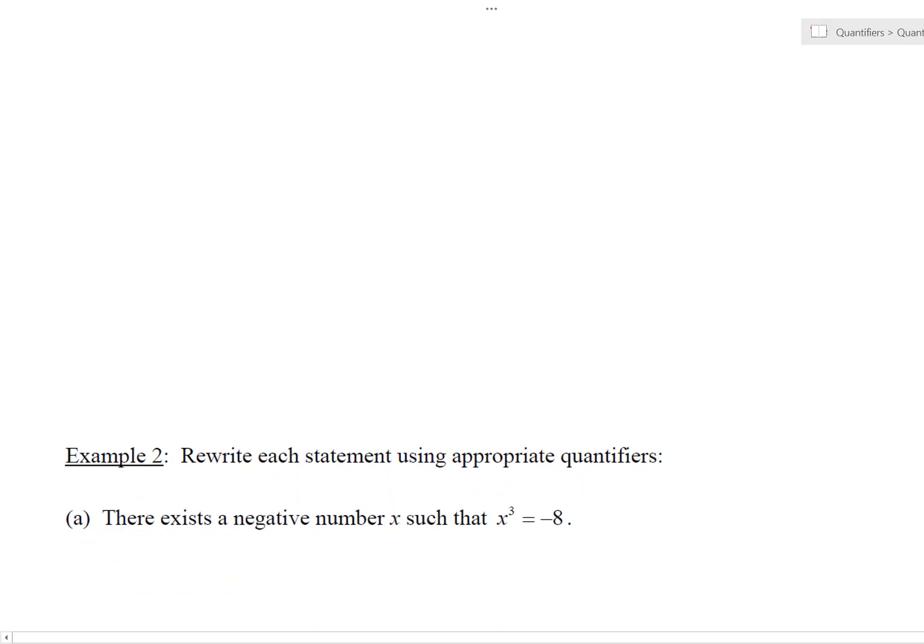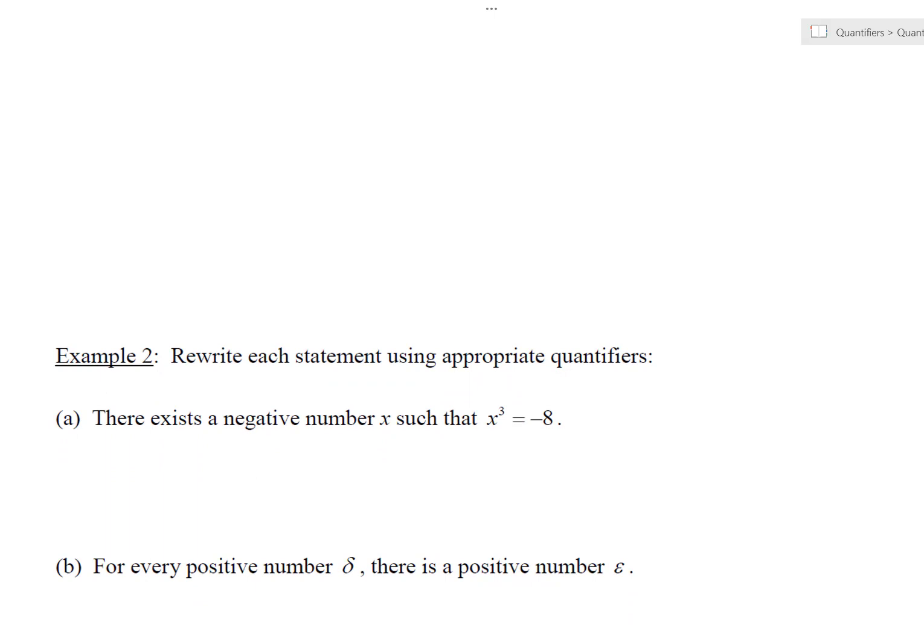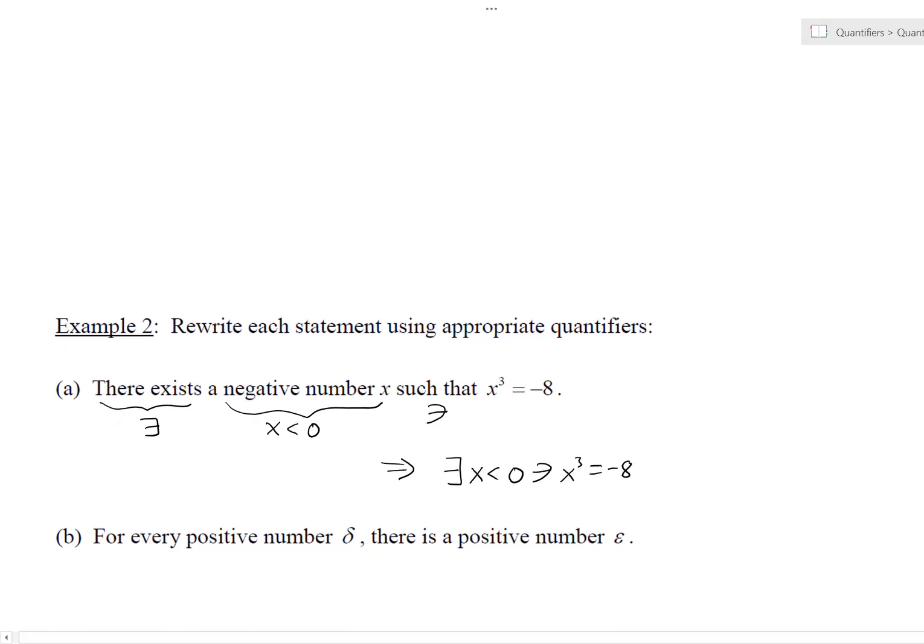A couple more examples here. We're going to work through these. Let's rewrite each of these statements using appropriate quantifiers. First one, part A. There exists, so right away, there exists a negative number X, so we could say something like X is less than zero for X to be negative, such that X cubed is negative eight. Piece it all together. We get, there exists some negative value X such that X cubed is negative eight. Kind of fancy looking.